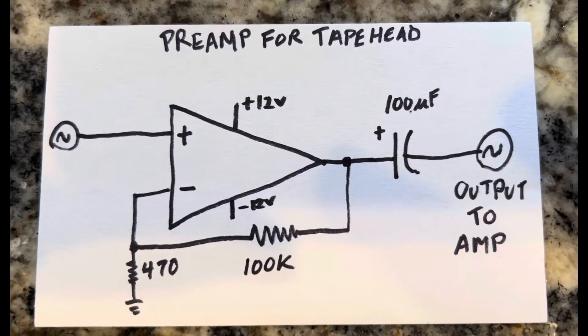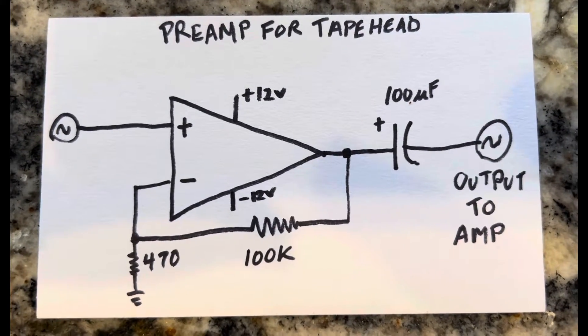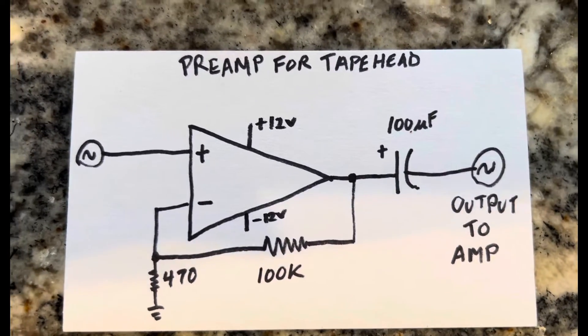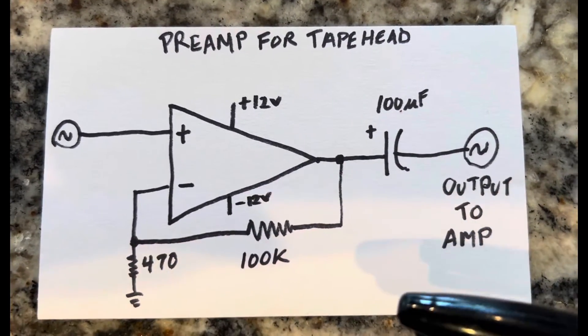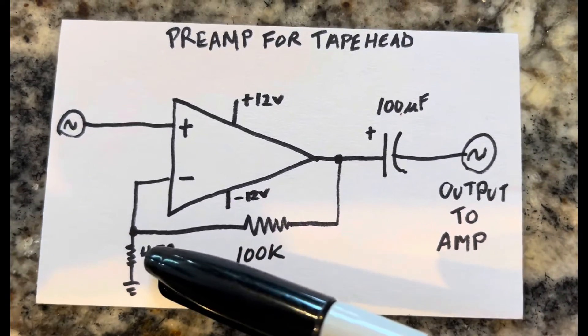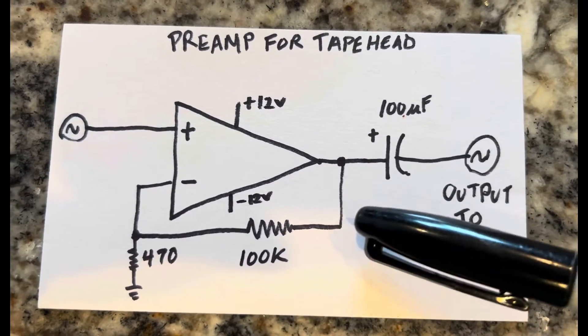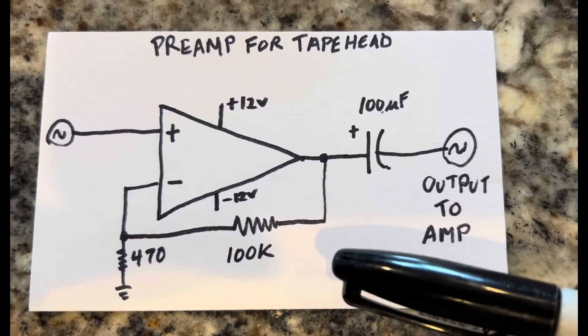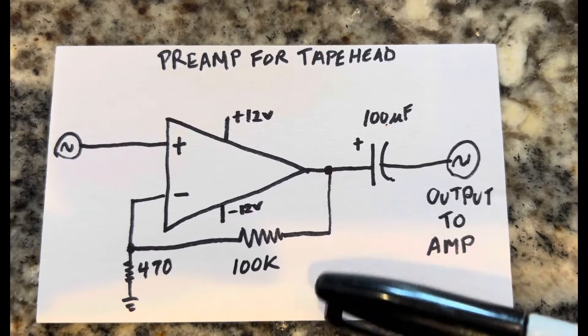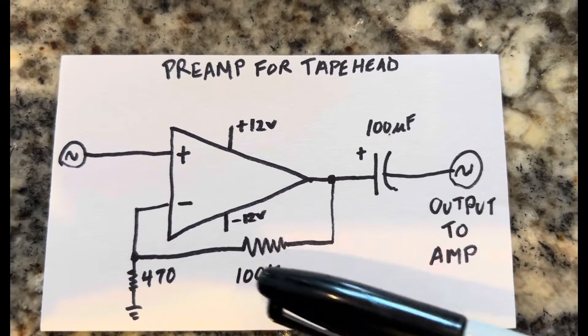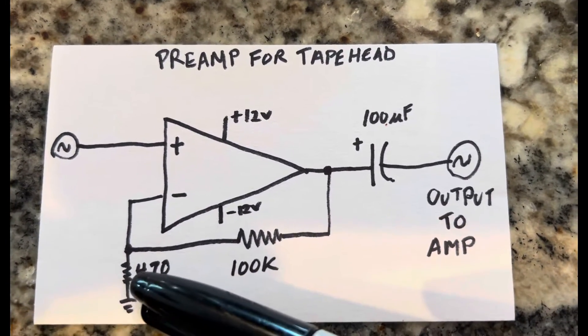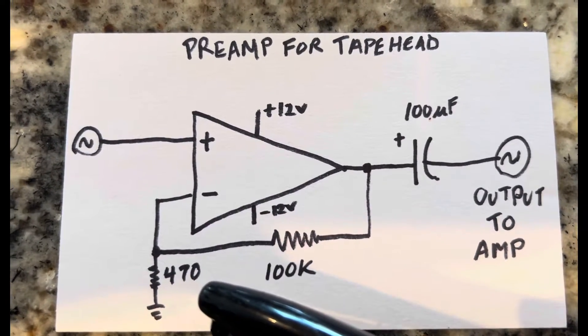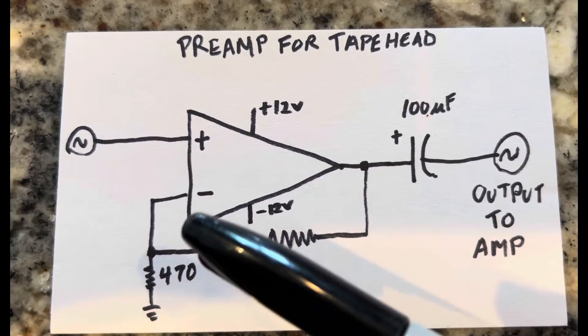I just want to make a correction from the previous video about the preamp. In the previous video, I made the circuit correctly, but I mistakenly put this resistor, the 470 ohm resistor, from here. But on the actual circuit, I made it correct. So if you put it here to ground, it doesn't actually give you any amplification, so you have to put it here. I can't believe I did that, but people make mistakes, so that's one of them.